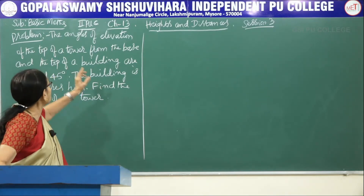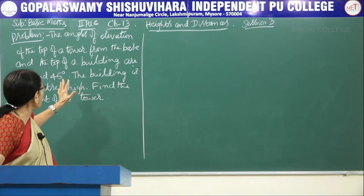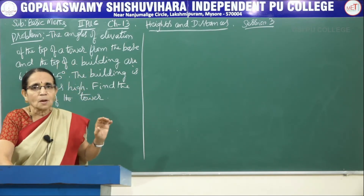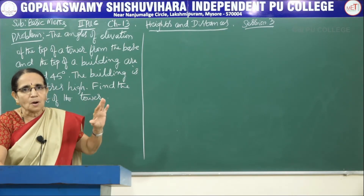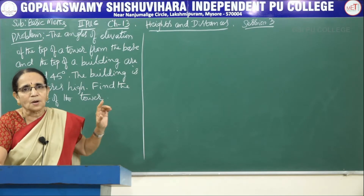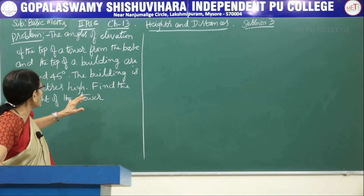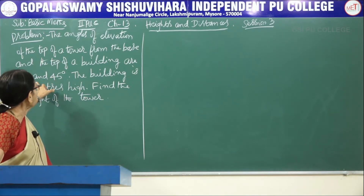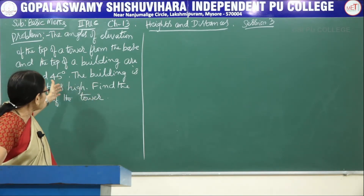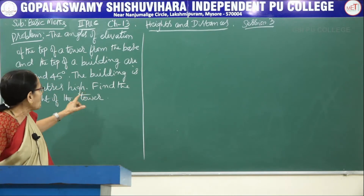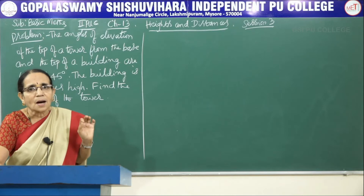The top of the tower has been observed from the base and the top of the building. From the top and the bottom of the building the top of the tower has been observed — giving two angles of elevation. One is 60 degrees, that is from the top, and the other from the bottom is 45 degrees. The height of the building has been given and we have to calculate the height of the tower.